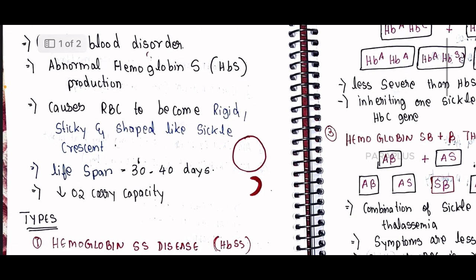A normal RBC has a lifespan of 120 days, after which it is destroyed. However, with the crescent or C-shaped sickle cell, the RBC lifespan is reduced to only 30 to 40 days. This means cells are destroyed much faster, which is very severe.